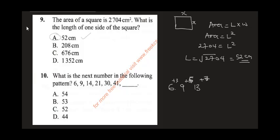So continuing the pattern: 18 plus 7 gives 25 — wait, following the sequence: 18 plus 7 is 25, plus 9 is 34 — actually tracing through: we add 7 to get 25, then add 9 to get 34, then add 11 to get 45, then add 13 to get 54. The correct answer is A.